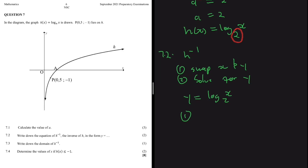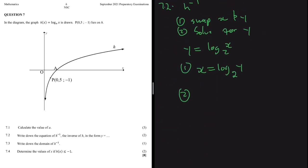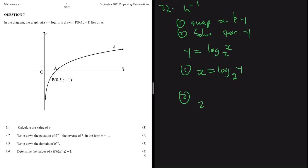Step one: swap X and Y. In place of Y we put X, so X = log base 2 of Y. Step two: solve for Y using the log rule again. We get 2 to the power of X equals Y, so Y = 2^X. That is the inverse of our function H(x) — just swap X and Y, then solve for Y.